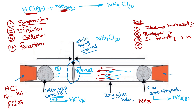So the relative molecular mass of HCl is 36 and of NH₃ is 17. The ammonia gas is lighter — it has a smaller relative molecular mass than the HCl particles — so it moves faster and diffuses more quickly. That is why the white ring is formed closer to the side of the cotton wool soaked with concentrated hydrochloric acid.